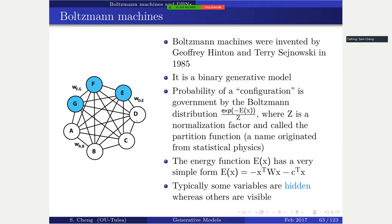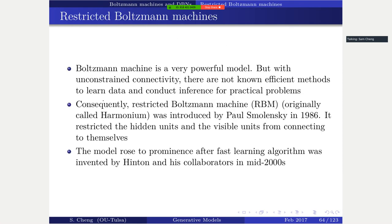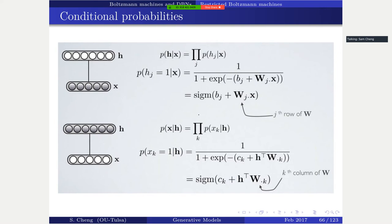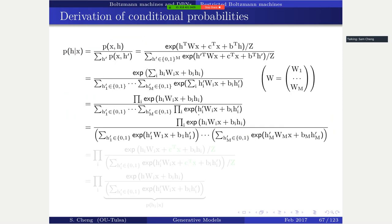The original Boltzmann machine is intractable, so the restricted Boltzmann machine (RBM) is a simplified version using a bipartite graph instead - hidden units on one side, visible units on the other. Hidden units cannot interconnect with each other, and neither can visible units. With that structure, we can derive the conditional probabilities.